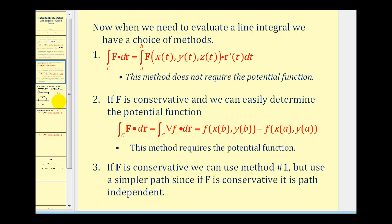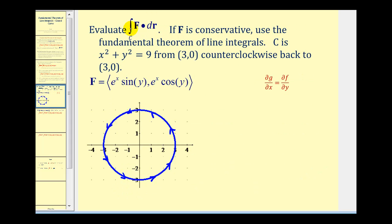In this video, we'll look at a curve that is closed. We want to evaluate this line integral using the fundamental theorem of line integrals if F is conservative. Here, c is the circle x² + y² = 9 traversed counterclockwise from the point (3, 0) back to the point (3, 0) — so we start and end at the same point.